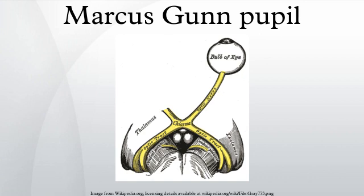Thus, light shone in the affected eye will produce less pupillary constriction than light shone in the unaffected eye. A Marcus Gunn pupil is distinguished from a total CN2 lesion, in which the affected eye perceives no light. In that case, shining the light in the affected eye produces no effect. Anisocoria is absent.